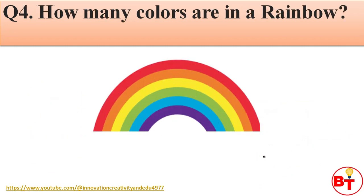Question number 4: How many colors are in a rainbow? Answer: 7.